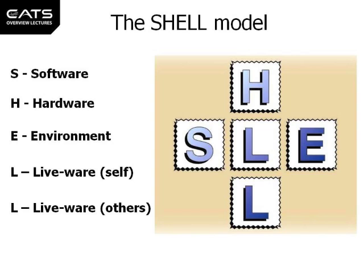Edwards' observations are that the socio-technical systems are always shaped by three components: software, hardware and liveware, embedded in an environment. Any change of a component impacts the others. When introducing, for example, a certain technology into a working environment, this has consequently an implication to the people working in the environment and to the processes in this environment.